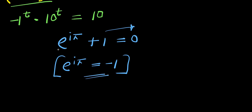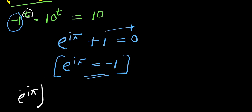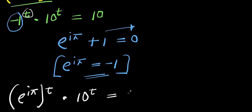You should substitute this for negative 1 here. You will simply have e to the power of i times pi, raised to the power of t, times 10 to the power of t, equals 10.